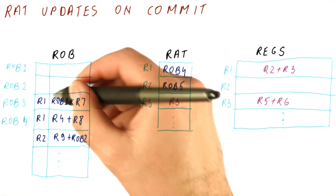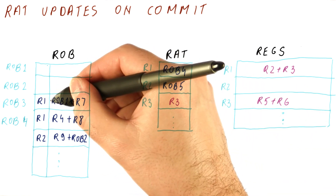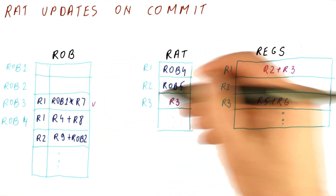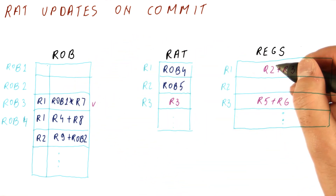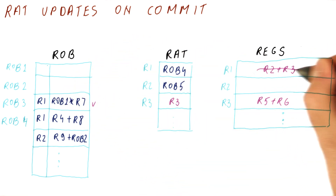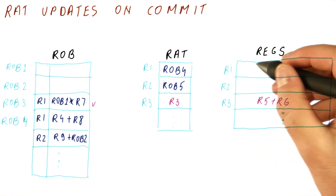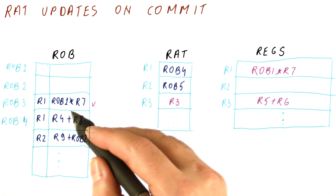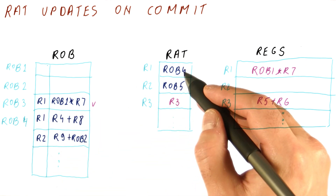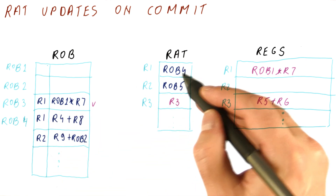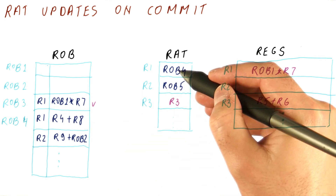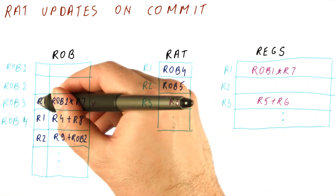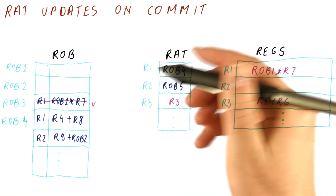This instruction is the next one to commit. We take the result and put it in R1, overwriting what was there before. We then check whether for R1 we are the latest rename — and we are not. We are ROB3, but the RAT says ROB4. So we leave the RAT entry alone and free this entry from the ROB.